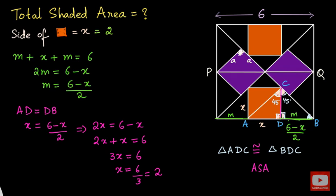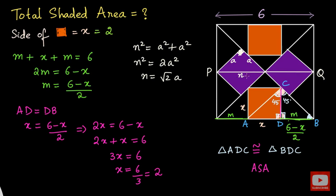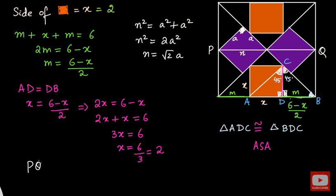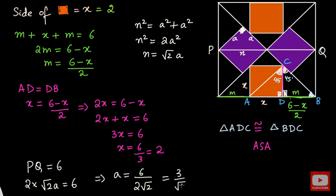We know that the corner angle is 90 degrees, so we apply Pythagoras' theorem to find the diagonal. Calling the diagonal N, we get N² = A² + A² = 2A², so N = √2 · A. The length of the diagonal is √2 · A. From the diagram, the length PQ equals 6, and PQ is equal to 2 times the diagonal of the purple square, so 2 · √2 · A = 6, giving A = 6 / (2√2) = 3/√2.